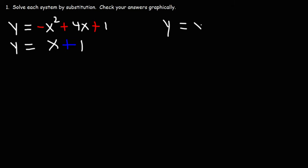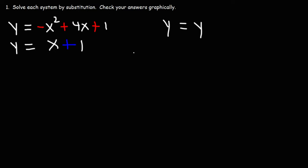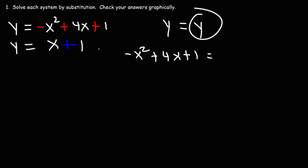We'll start with y equals y. I'm going to replace the y on the left with the first equation: negative x squared plus 4x plus 1. And on the right side, I'm going to replace that y with the second equation.